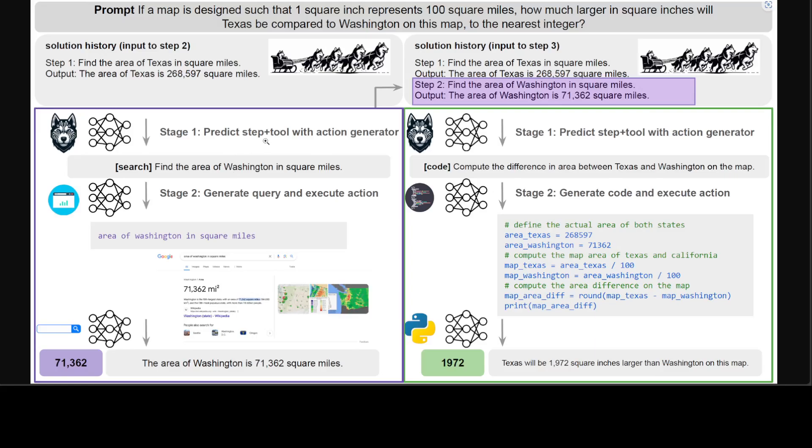Given the input question and the solution generated so far, the action generator jointly predicts the next high-level step to take and associated tool. The tool forms the ontology of their actions, which include code, math, search, and common sense. If the final answer to the question has been reached in the solution history, then the action generator returns the answer.